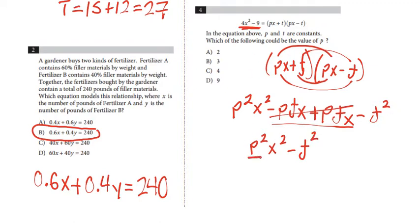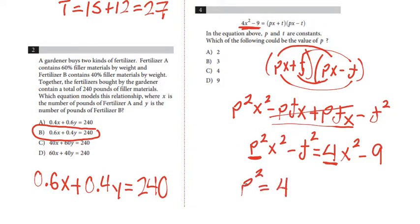We're looking for the value of P. Comparing to the equation, the coefficient of x squared is 4. So we set p squared equal to 4, and take the square root of both sides. We find that P equals positive 2, which is answer choice A.